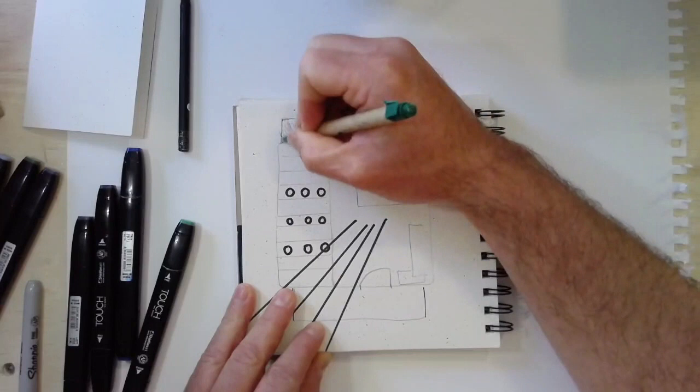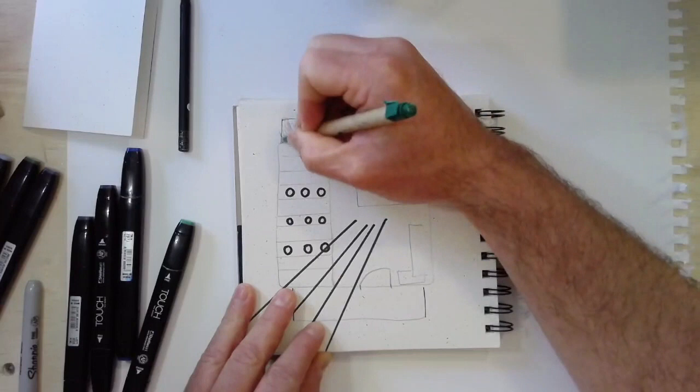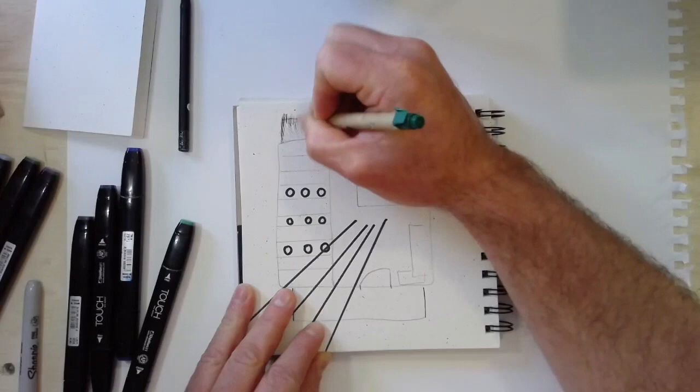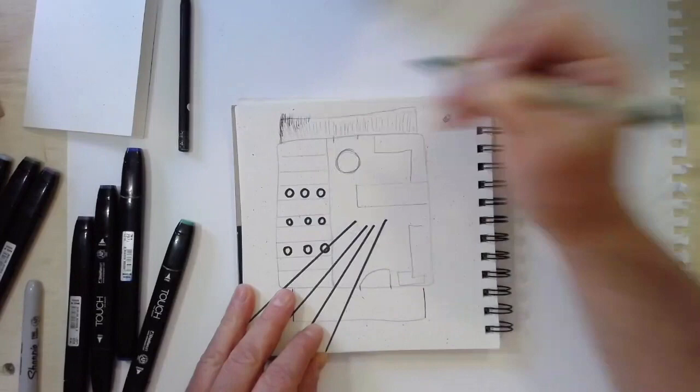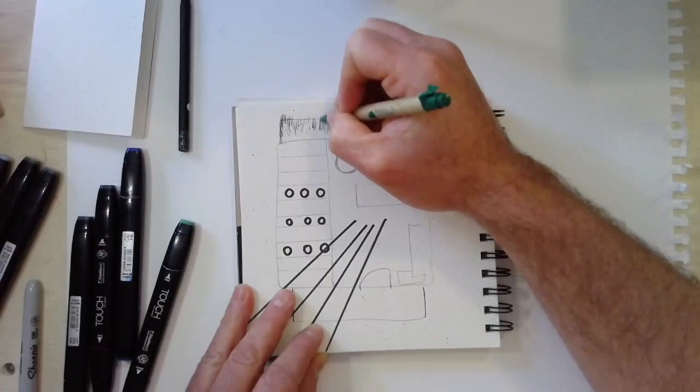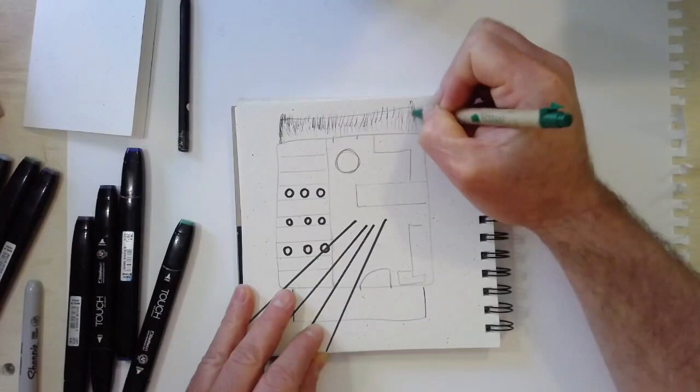Now, visual texture is different than actual texture. So visual texture means if you touch it, you don't really feel the difference. It just feels like paper. But if you look at it, it looks kind of spiky or fuzzy. Or you can make it look bumpy. There's lots of ways of adding visual texture.